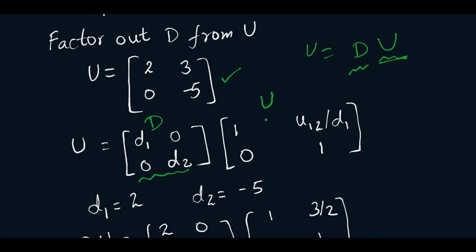Afterwards, U will become: we take out d1 from the first row, so the first row becomes 1, and the other elements are divided by d1. Similarly for the second row, this element was originally d2, now divided by d2, giving 1.